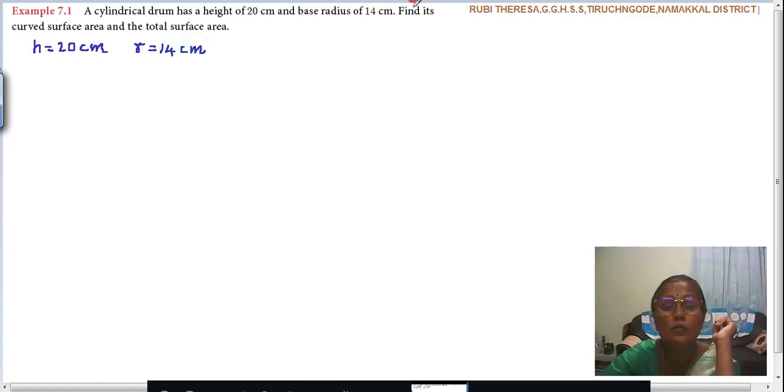Next, what are they asking? Find its curved surface area and total surface area. They are asking CSA, then TSA. CSA means curved surface area, TSA means total surface area. What is given? Height is given and radius of the cylinder is given.